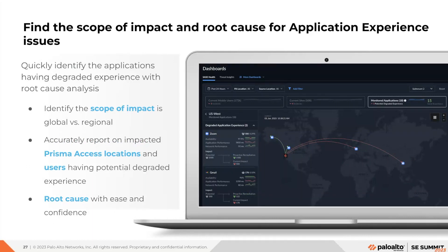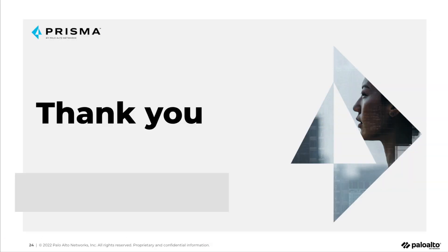You can quickly identify applications having a degrading experience with root cause analysis. It helps you identify the scope of impact — global versus regional — and report any impact at the Prisma Access location, user, and root cause level with ease and confidence. That concludes our session for today.